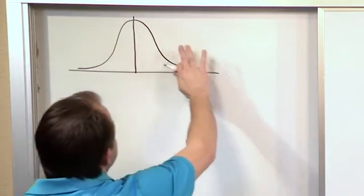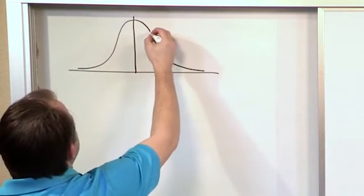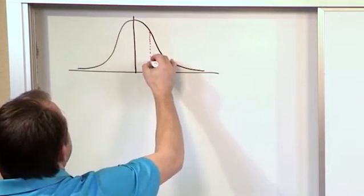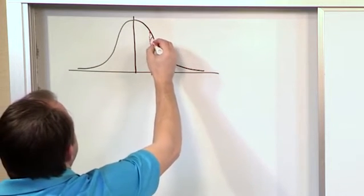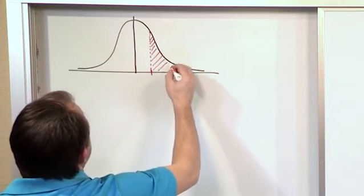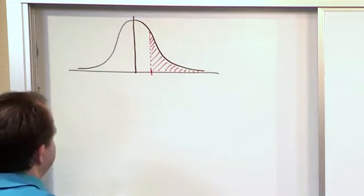You need to envision this bell-shaped curve here and draw a dotted line down here, and then shade everything to the right.